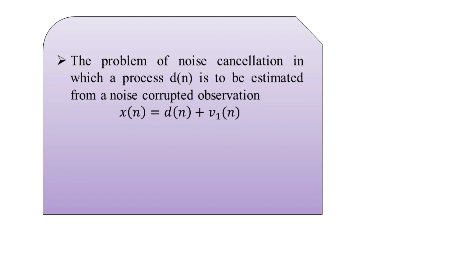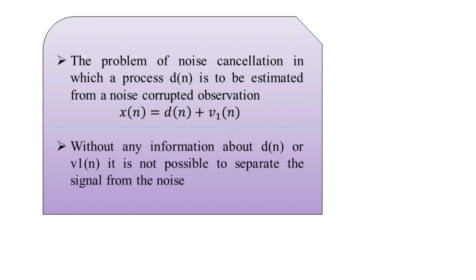Without any background or information about the desired signal or the noise signal, it is quite not possible to have separation of the intended signal from the noise. So here we expect to be given a reference signal denoted by v2(n) that is correlated with the noise signal v1(n). The reference signal v2(n) may then be utilized to have estimation of the noise v1(n), and this estimation will be further subtracted from the original practical signal x(n).